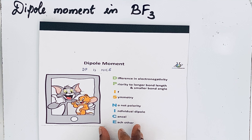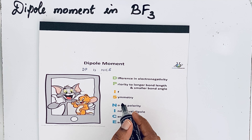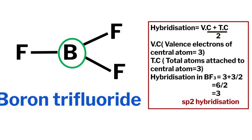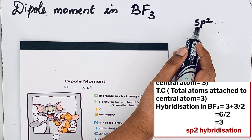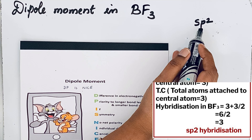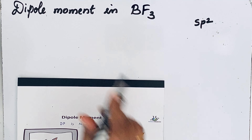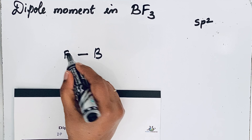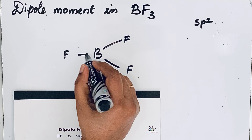To know whether BF3 has a symmetry or not, we should find the hybridization of boron in BF3. The hybridization of boron in BF3 is sp2. So there is no lone pair on boron. This sp2 hybridization gives the molecule the shape of trigonal planar. Let us draw the BF3 molecule — boron in the center with three fluorine atoms — making it a planar molecule.